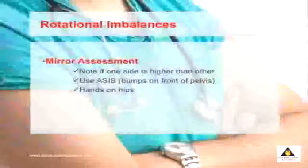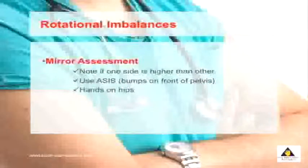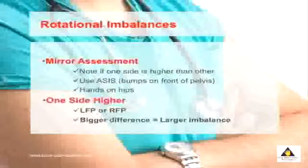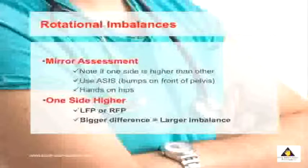There are two landmarks that you can use. The first is what's called the ASIS, which are the bumps on the front of your pelvis, or alternatively you can just place your hands on top of your hips. You'll note that one side of your pelvis is higher than the other, and this creates what's called a rotational imbalance. If your left side is higher you have what's called an LFP, and if the right side is higher you have an RFP.